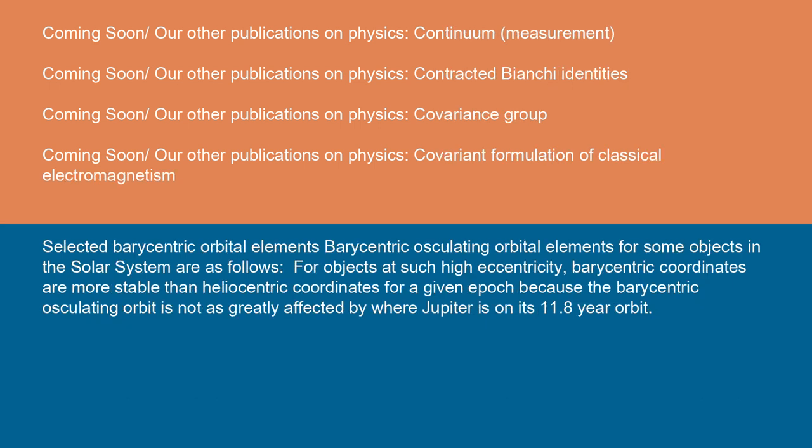Selected barycentric orbital elements: barycentric osculating orbital elements for some objects in the solar system are as follows. For objects at such high eccentricity, barycentric coordinates are more stable than heliocentric coordinates for a given epoch because the barycentric osculating orbit is not as greatly affected by where Jupiter is on its 11.8-year orbit.